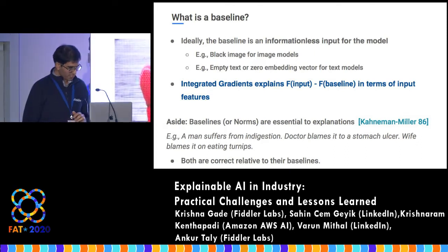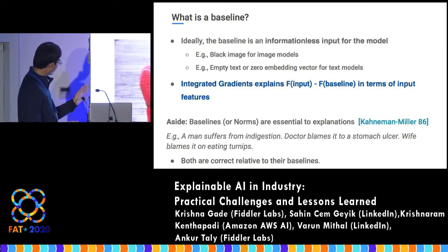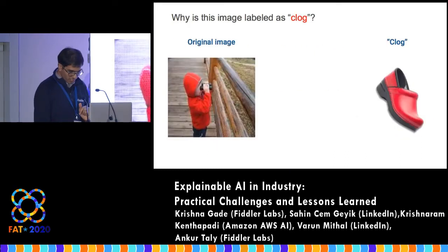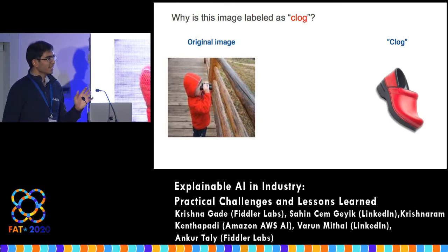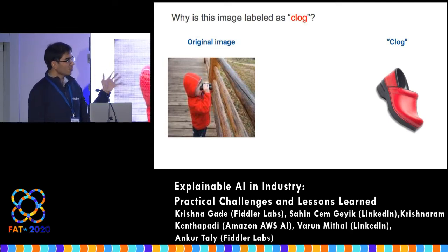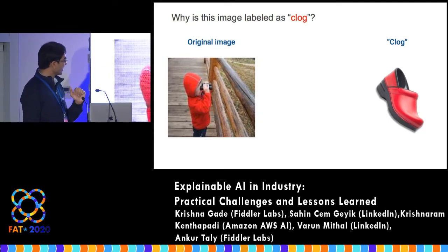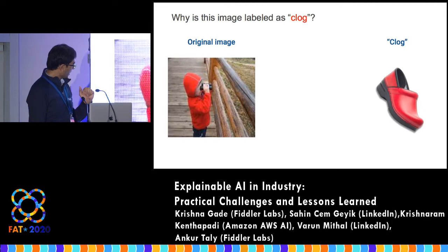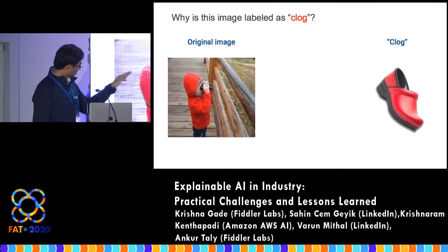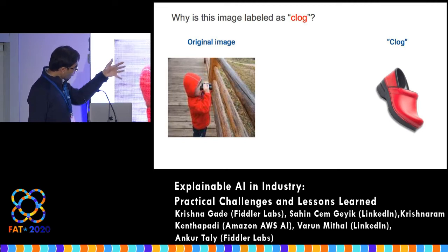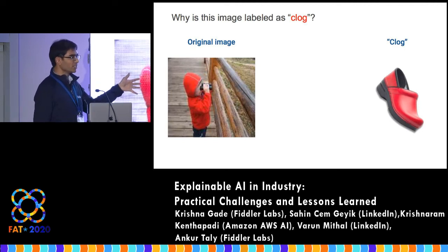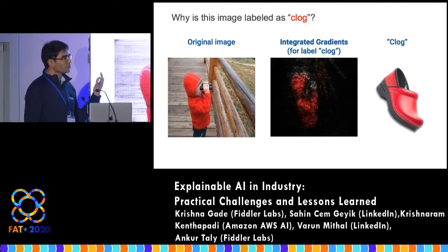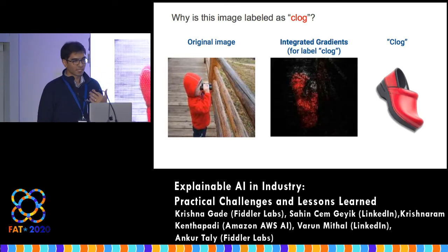So, why is this image a clog? These are the attributions integrated gradients tells you — those highlighted pixels. If you squint at it, you can see a shoe emerging, like an optical illusion to the network.